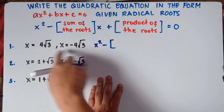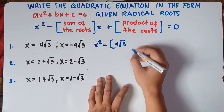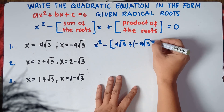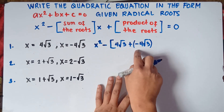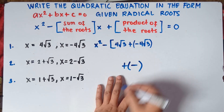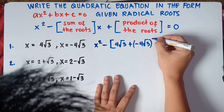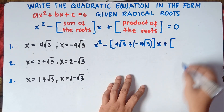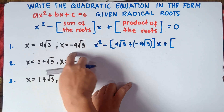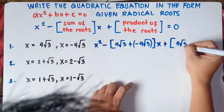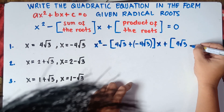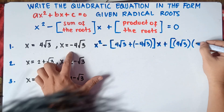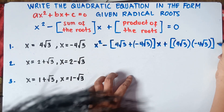So the word sum there means you need to add these two roots. So 4 square root of 3 plus negative 4 square root of 3. I will just put parenthesis because we're not allowed to have two signs close to each other. That's why we need to put parenthesis. Then close bracket, times x, multiplied by x, plus their product. So product means we need to multiply these two roots: 4 square root of 3 times negative 4 square root of 3. Close bracket equals 0.